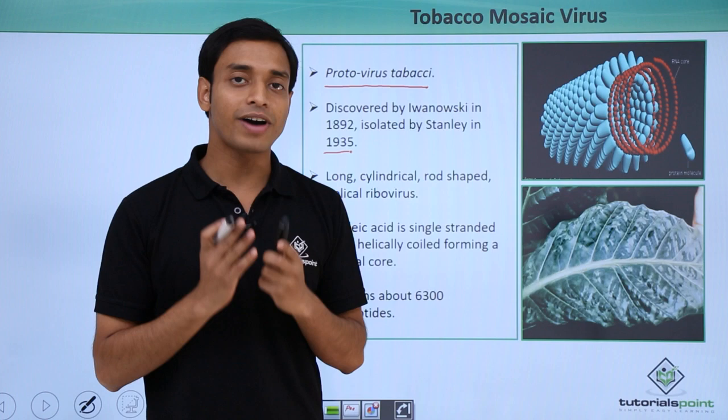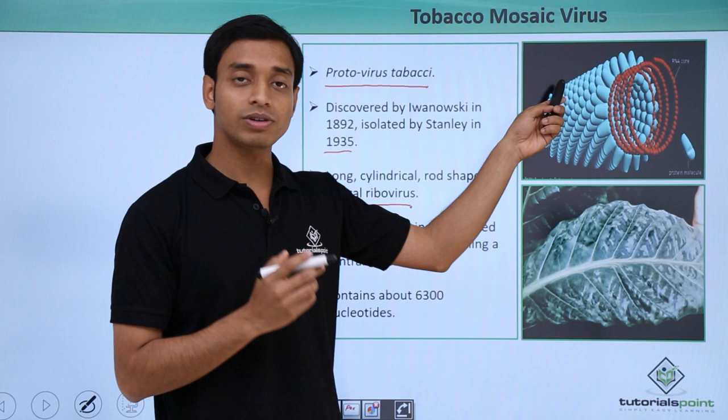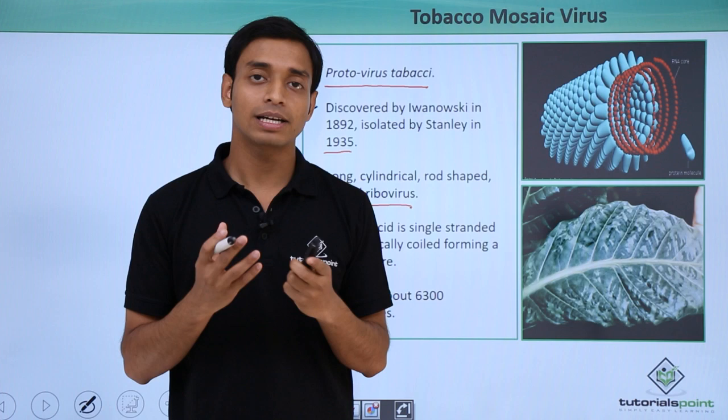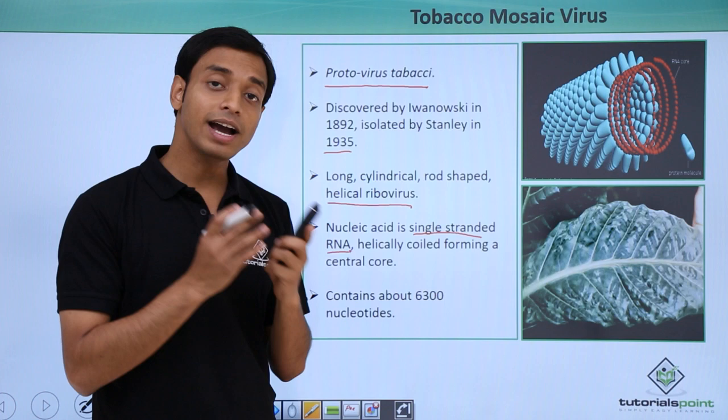These viruses are typically long and cylindrical — they can be rod-shaped, as you can see here. Importantly, they are helical riboviruses, meaning their structure is like a helix, similar to that of a spiral staircase.